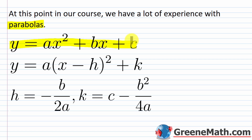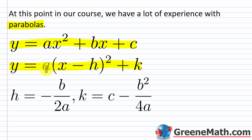Then we moved on and started talking about graphing parabolas, which led us to vertex form. For a vertical parabola, y or f(x) equals a times the quantity x minus h, squared, plus k, where h comma k is the vertex. You can plot that point and get additional points using graphing transformations based on f(x) = x squared, or use the step pattern with the a value. Note that h comes from negative b over 2a and k comes from c minus b squared over 4a.